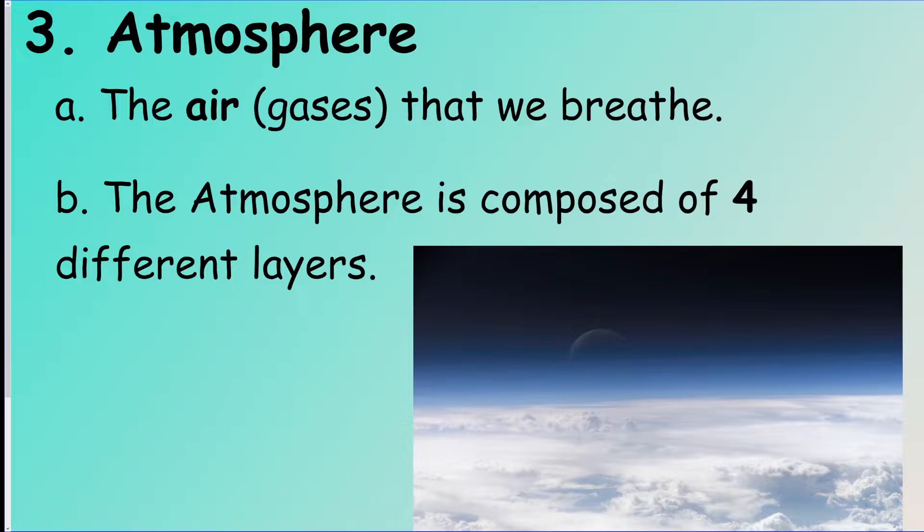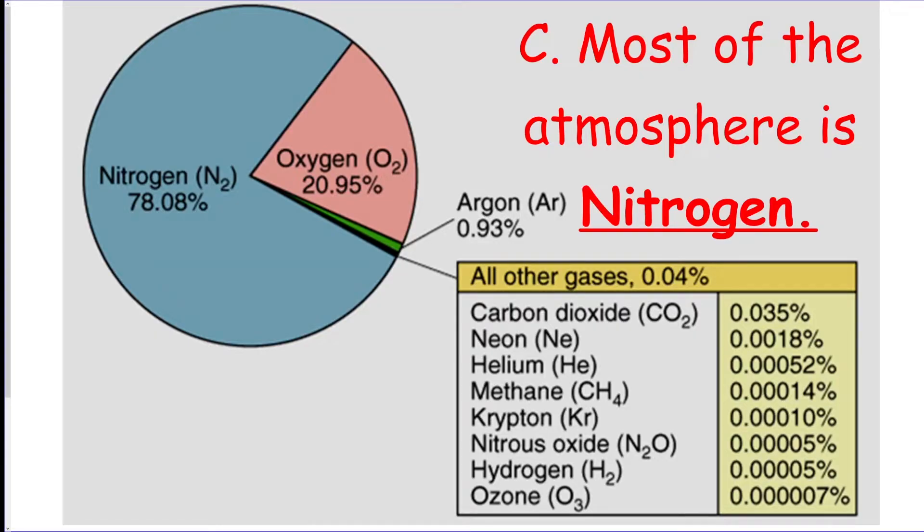The next layer is the atmosphere. So this is all the gases and the sky and everything we breathe in. The atmosphere has four different layers in itself, so they're like sub layers. The sky has four layers. Most of the atmosphere is nitrogen. A lot of people think it's mostly oxygen, but if you look at this breakdown in this picture, it's mostly nitrogen.